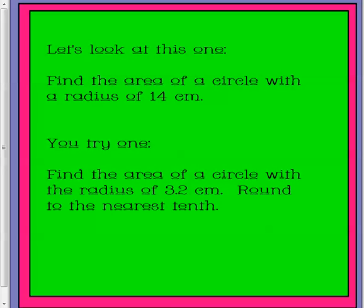Let's look at this one. Find the area of a circle with a radius of 14 centimeters. So we're going to use the formula, and we're going to plug in 14, and when we square 14, we get 196.